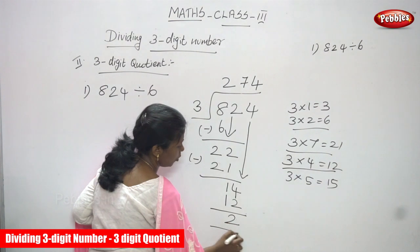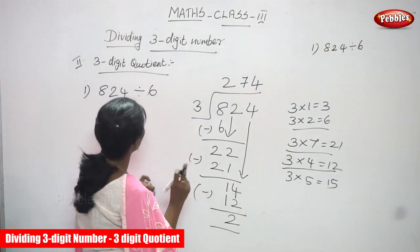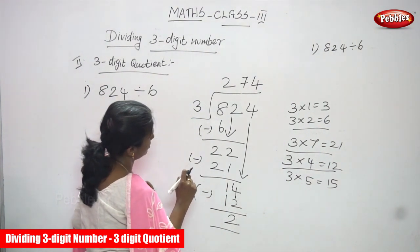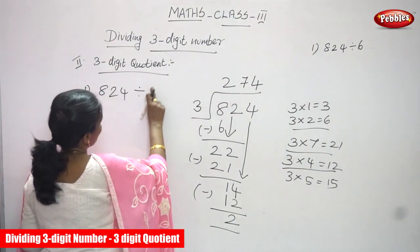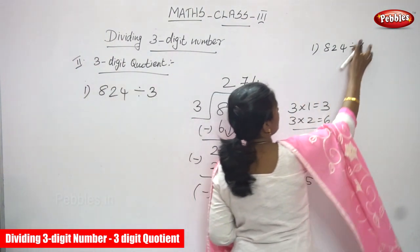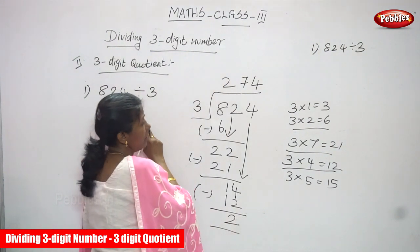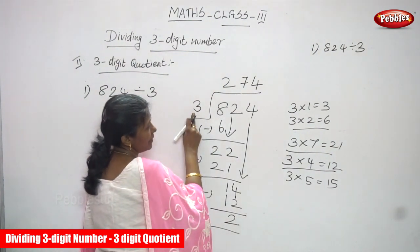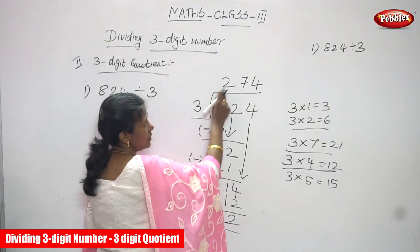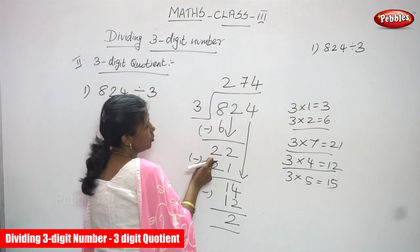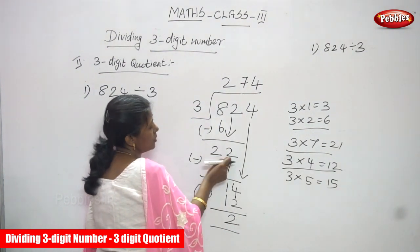So 14 minus 12: 4 minus 2 you can get 2. Now the quotient is a 3-digit number. I'm sorry — the divisor is 3, not 6. I have written wrong. The divisor is 3. So the answer is: 824 is divided by 3. After bringing down the tens place value 2, we get 22. 22 is greater than 3.